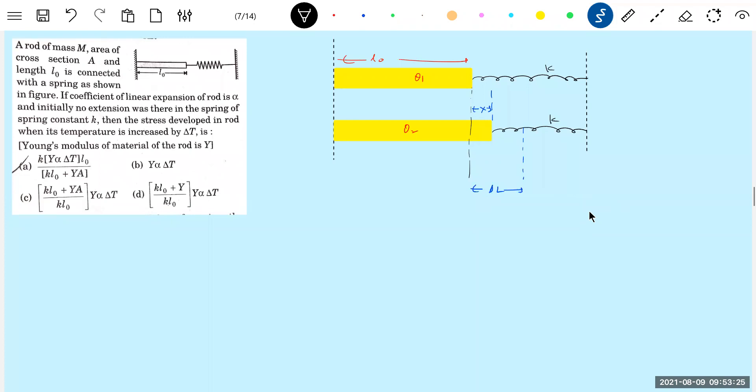Let me go for change in length of the rod. Change in the length of the rod, this should be equal to L0 alpha delta theta minus X. This was the change in length, delta L you call it. Now how you define Young's modulus? The stress should be equal to stress by strain.